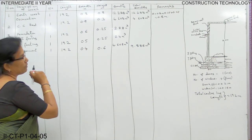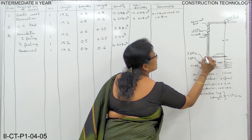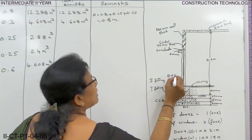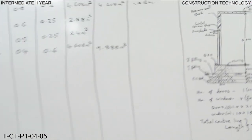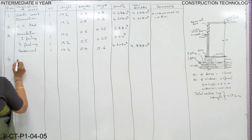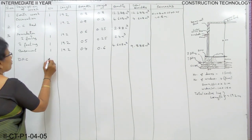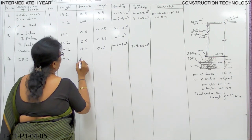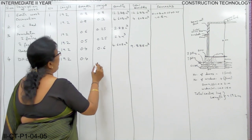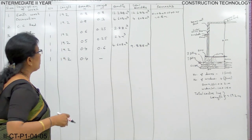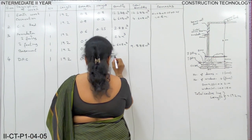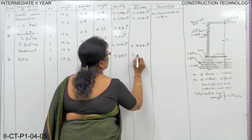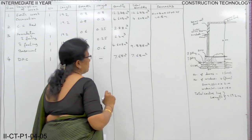After basement, the next work is DPC — damp proof course. Over this basement we will have DPC. For DPC the thickness is negligible; you take only length and breadth. Item 4, DPC: number 1, length 19.2, same breadth as basement which is 0.4, and height is a dash. When you calculate, the quantity is 7.68 square meters. Same value you write in total quantity: 7.68 square meters.